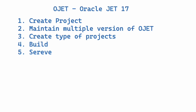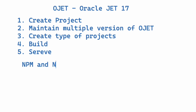Today I'm going to talk on Oracle JET - how to create a project, different parameters, how to maintain multiple versions of Oracle JET in a single machine, because when you're working on different projects they may be on different versions. Next, how to create different types of projects in Oracle JET: build, serve, and what is the difference between npm and npx, because I'm going to use npm to install and npx to execute.